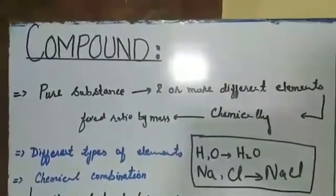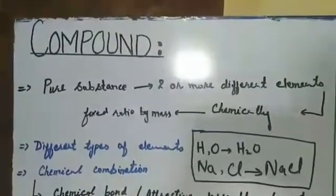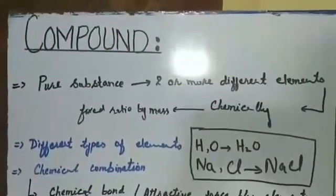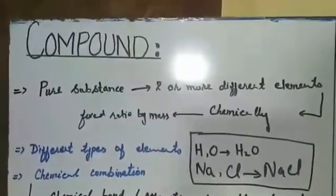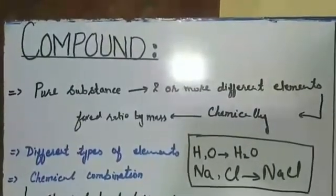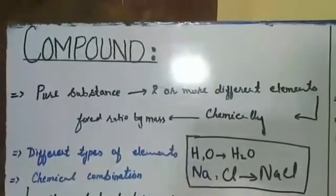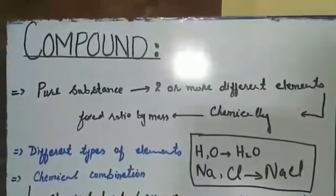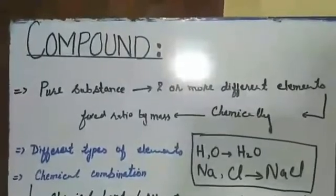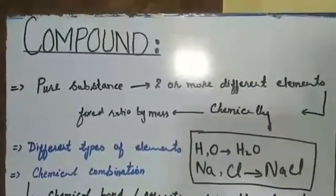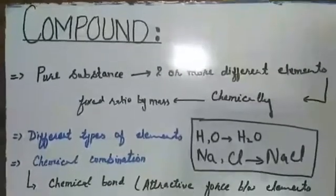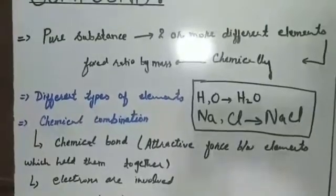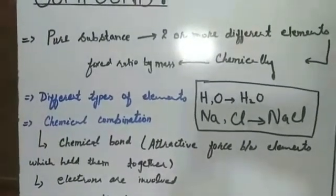Number one: different types of elements are necessary for the formation of a compound. For example, we have the compound H2O, and you can see that it is the combination of two different elements — hydrogen and oxygen. Same is the case with common salt NaCl; it is the combination of sodium (Na) and chlorine (Cl) combined together to form NaCl.